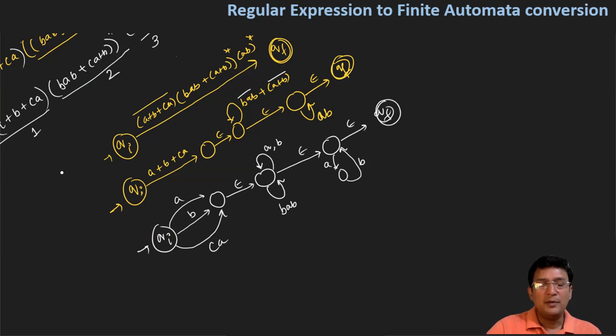Now we expand the (bab) component by creating states. From one state we transition on b, then to the next state on a, and then to another state on b.